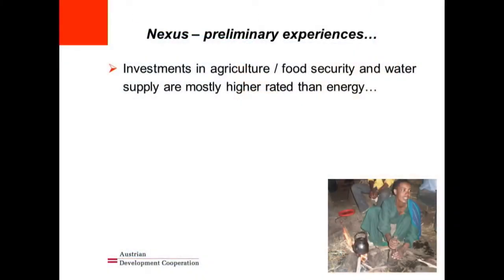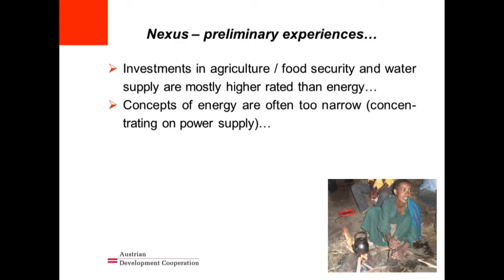One challenge is the required flexibility versus the need for quick results — it depends whether you look at facilitating change processes or at quick outcomes. Our preliminary experience is that at local level, investments in agriculture, food security, and water supply are mostly rated higher than energy. Concepts of energy — and sometimes water — are too narrow and mainly concentrate on the supply side. Integrating these three sectors — rural development, agriculture, water, and energy — also requires synthesizing indicators and results, as they operate at quite different levels.